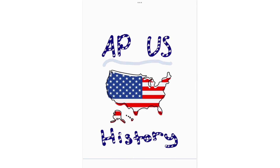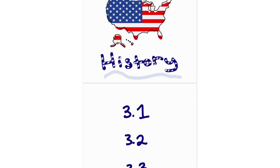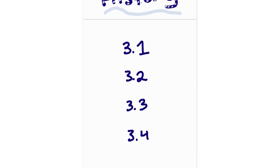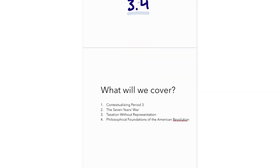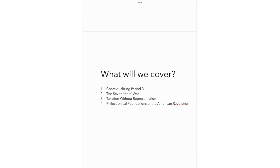Hello everyone and welcome back to AP US History Review. We've got a lot to cover today. We're covering topics 3.1, 3.2, 3.3, and 3.4 in your APUSH textbook. We'll be covering contextualizing Period 3, the Seven Years War, taxation without representation, and philosophical foundations of the American Revolution. Let's get right into it.